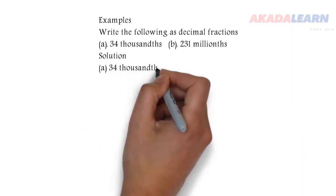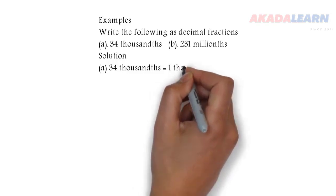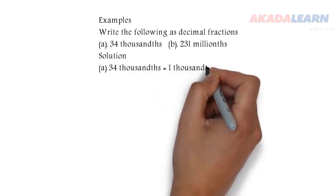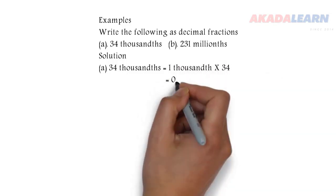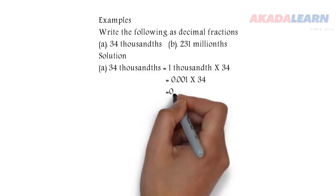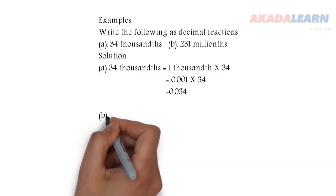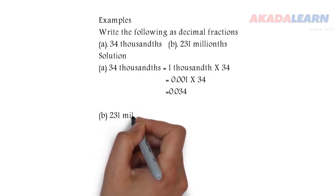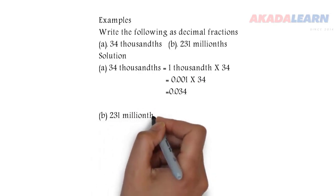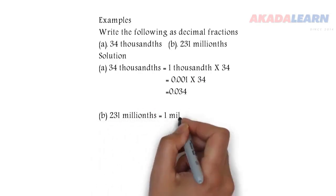34 thousandths is the same as saying 1 thousandth times 34. One thousandth is 0.001. Then we multiply it with 34, and when we do the multiplication we get 0.034.